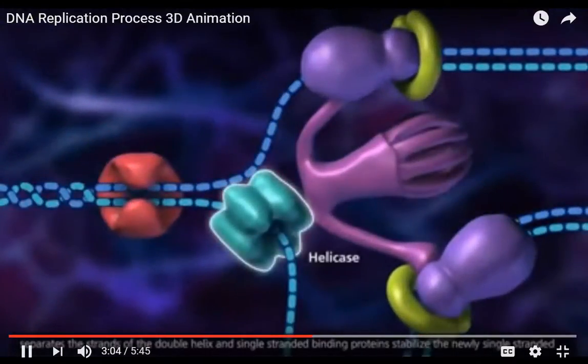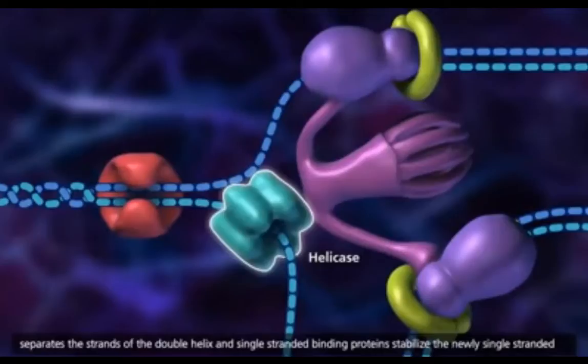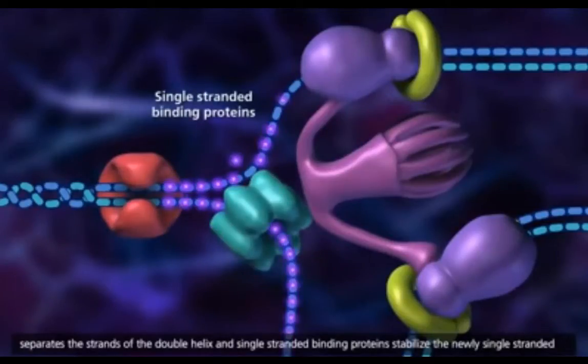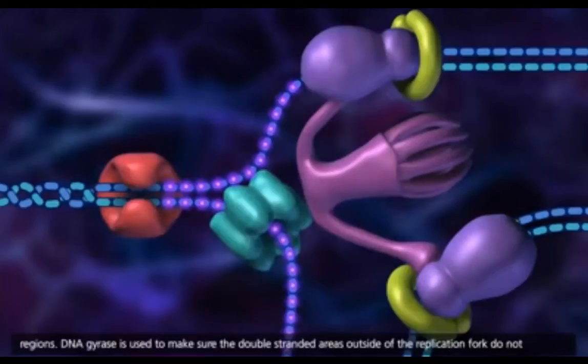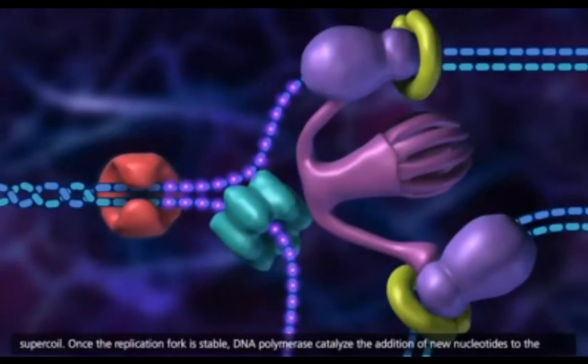Helicase separates the strands of the double helix. And single-stranded binding proteins stabilize the newly single-stranded regions. DNA gyrase is used to make sure the double-stranded areas outside of the replication fork do not supercoil.